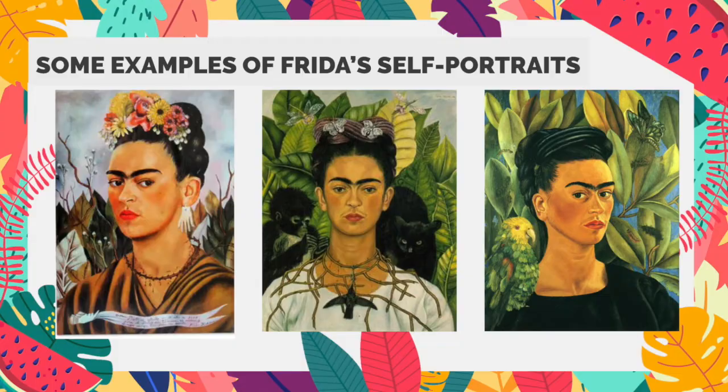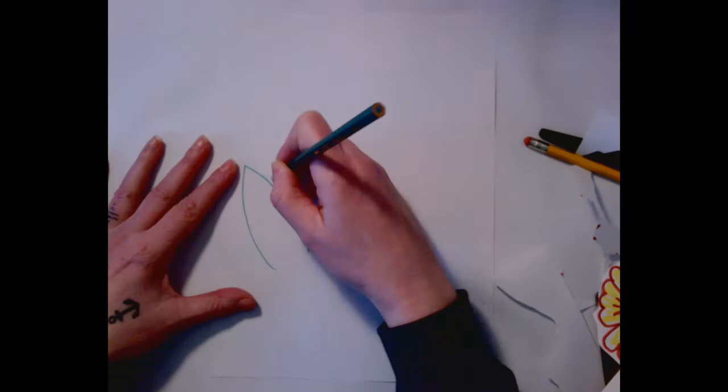We're now going to look at the background of Frida's work. Do you notice how she has leaves in the background? That's because it was very lush where she grew up. So she saw a lot of leaves in her world in Mexico. We're going to make a background that has lots of leaves in the back of it. So we're going to put aside the face for now and work on paper. Get that third piece of paper out.